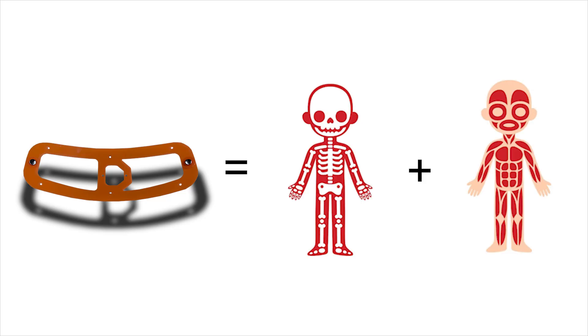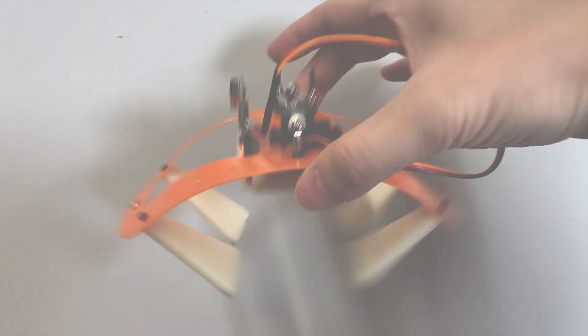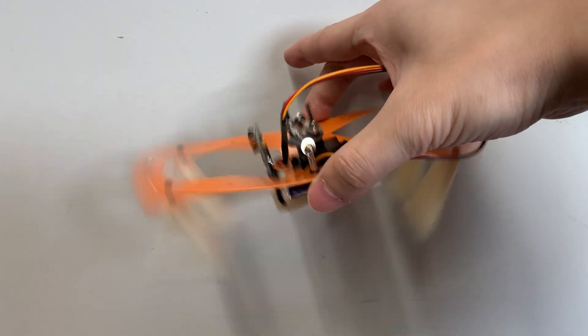This is a new idea because we make the skeleton also to be the muscle, the chassis also to be the engine. Thus we can delete some unnecessary parts, making the robot simpler and more locomotive.